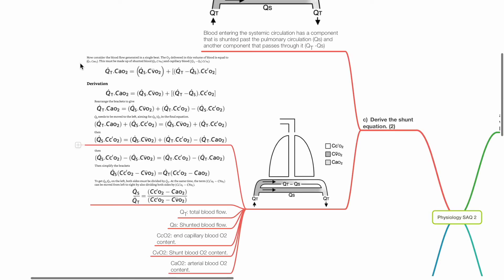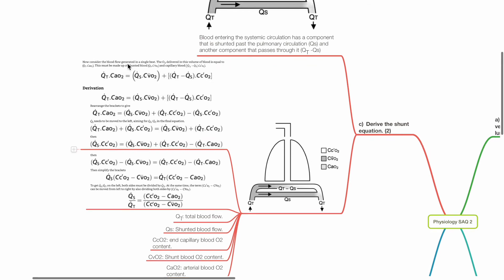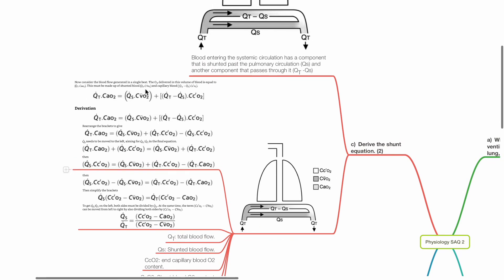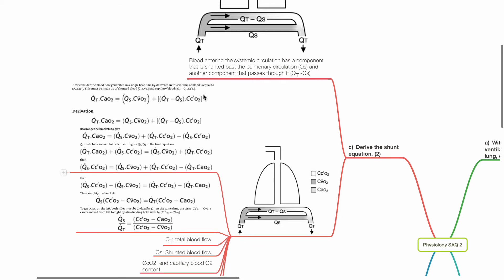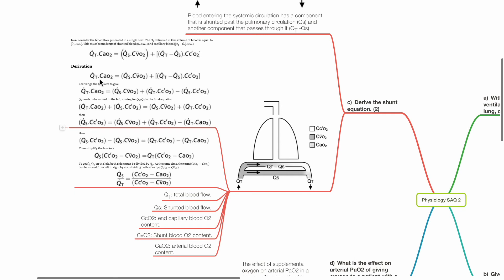The oxygen delivered in this volume of blood is equal to Qt times CaO2. This must be made up of shunted blood flow Qs times CvO2 and capillary blood Qt minus Qs times CcO2. Qt times CaO2 equals Qs times CvO2 plus Qt minus Qs times CcO2.